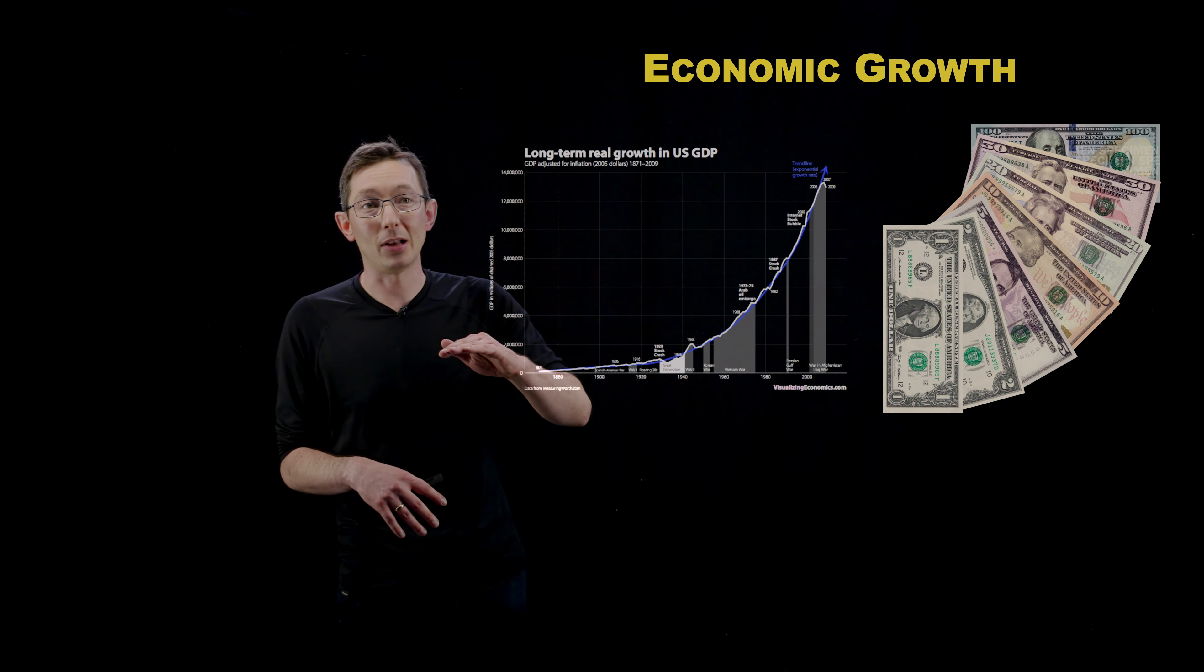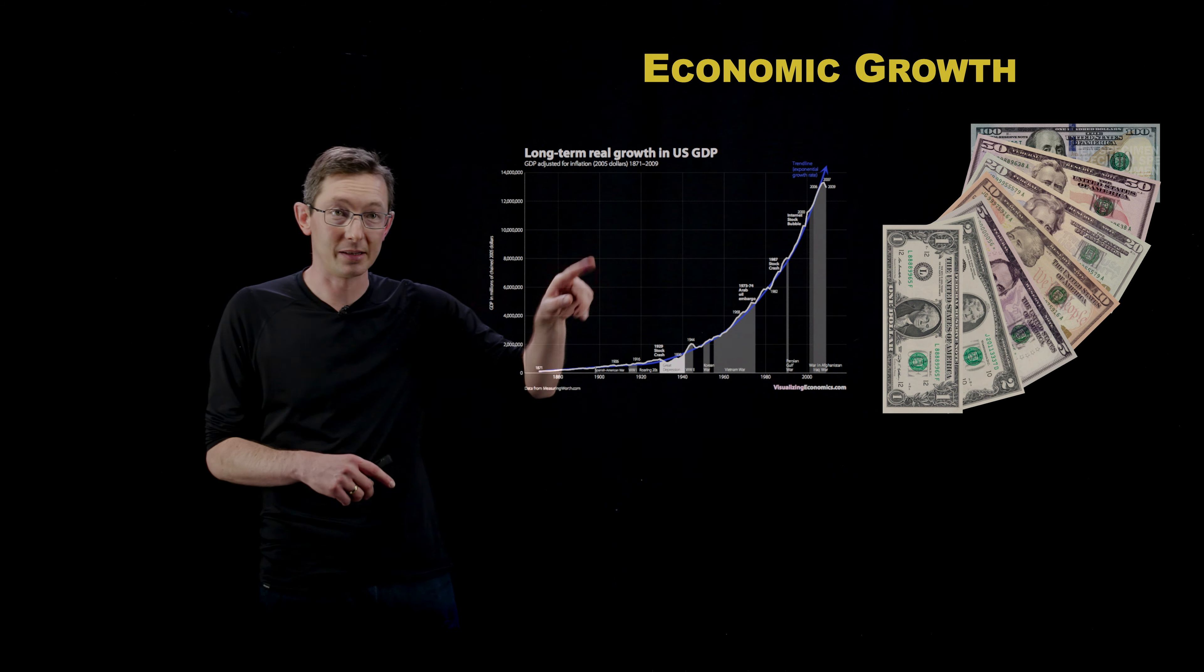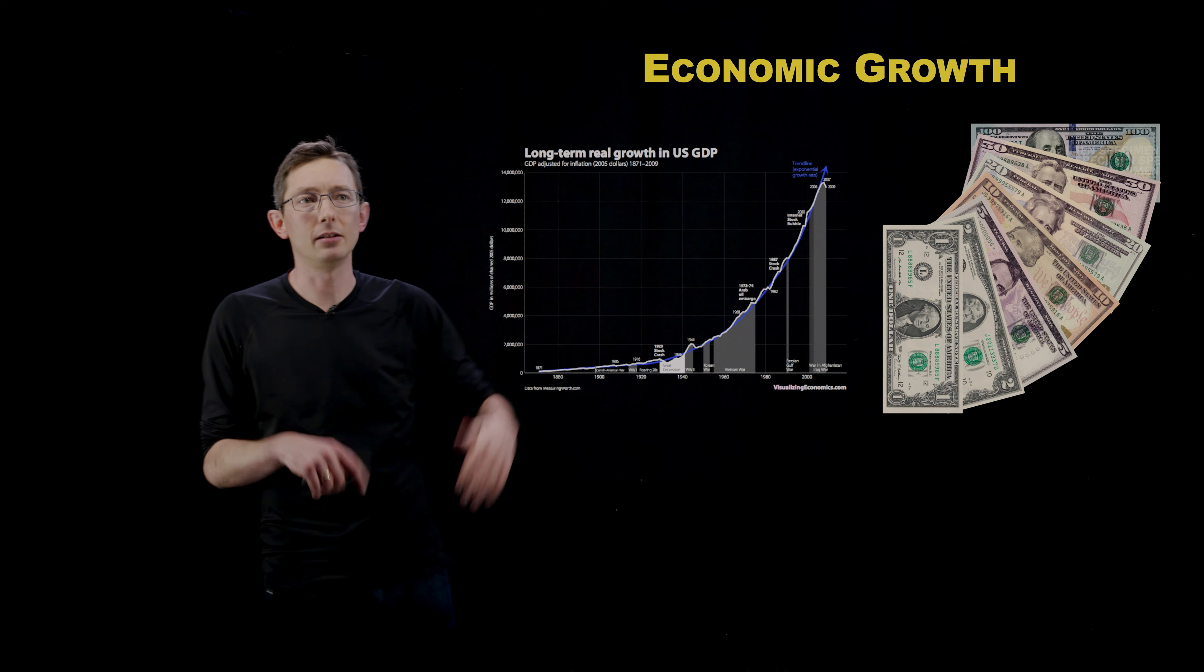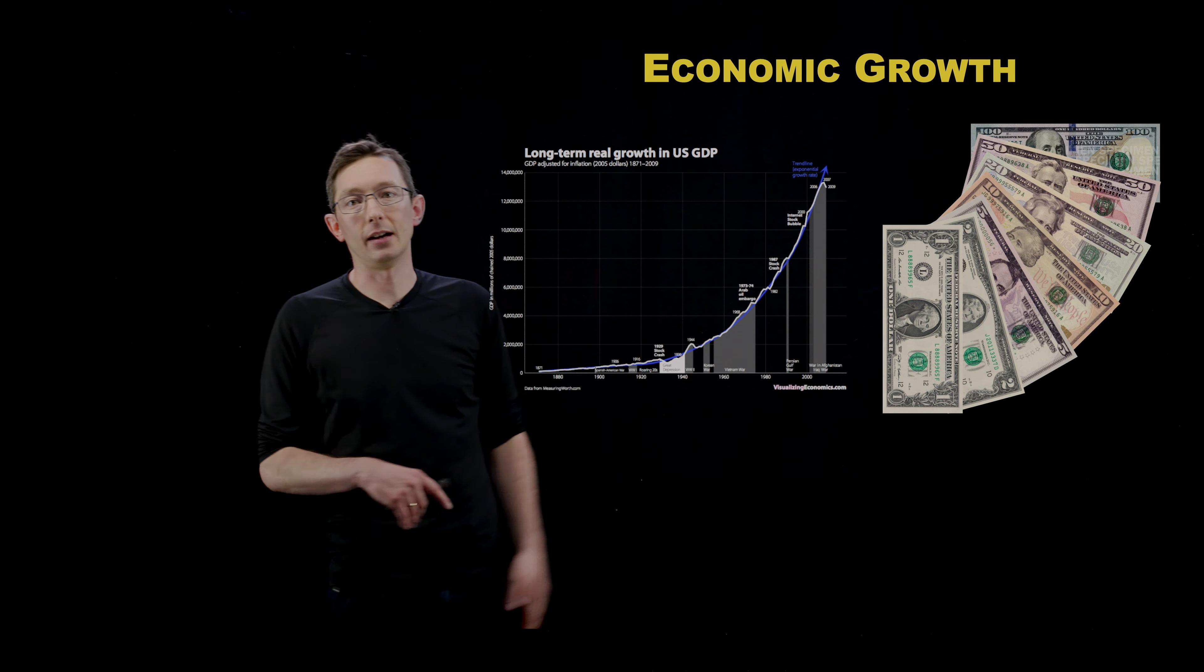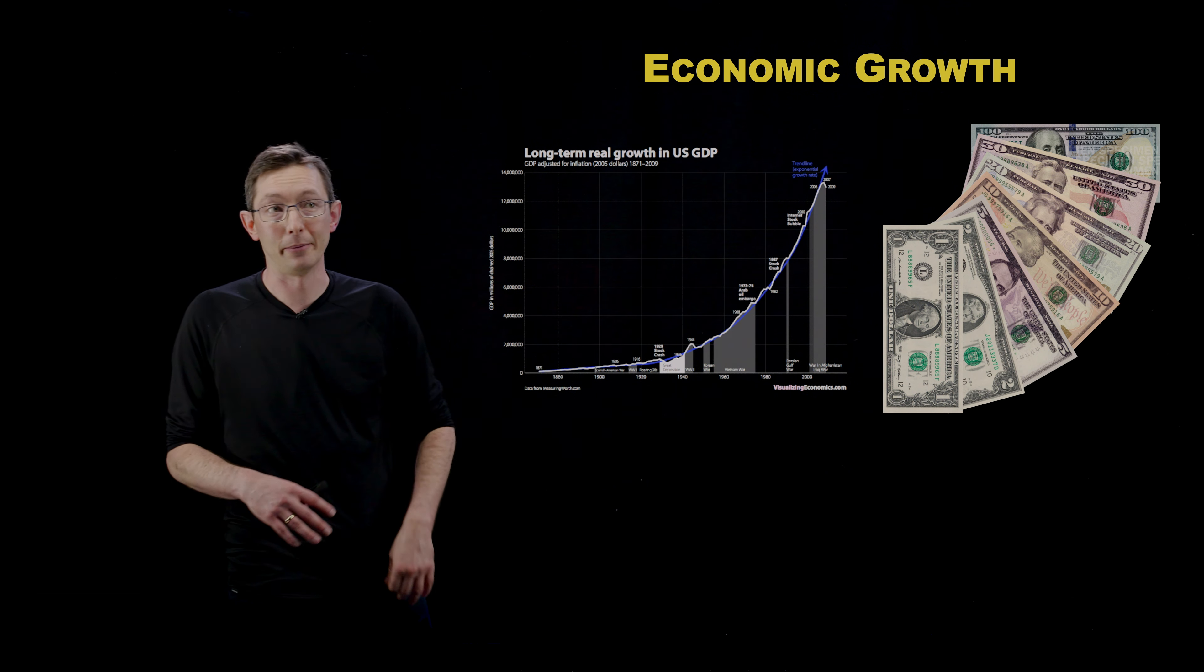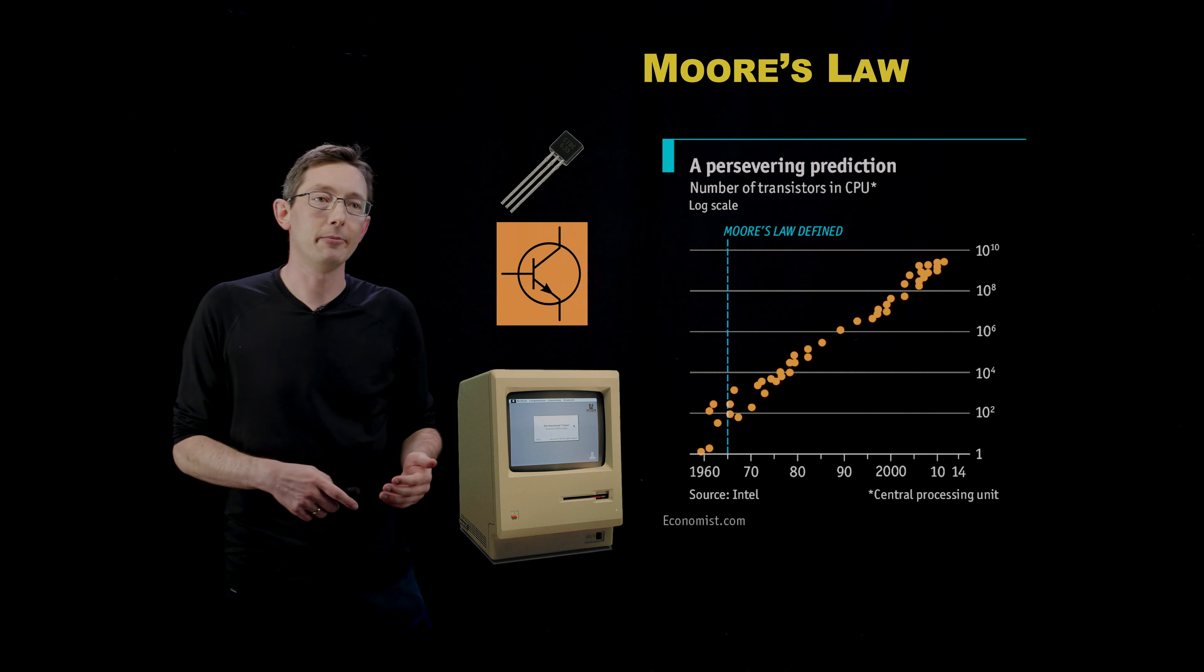So this is a plot of the long-term growth of the US GDP, the gross domestic product. This is not the stock market. The stock market's much more volatile. But this is the actual gross production of the US over time for about a hundred years. And you can see that this is very nearly exponential, even given the Great Depression and recessions and stock market crashes. This is very exponential in time. So economic growth is one area.